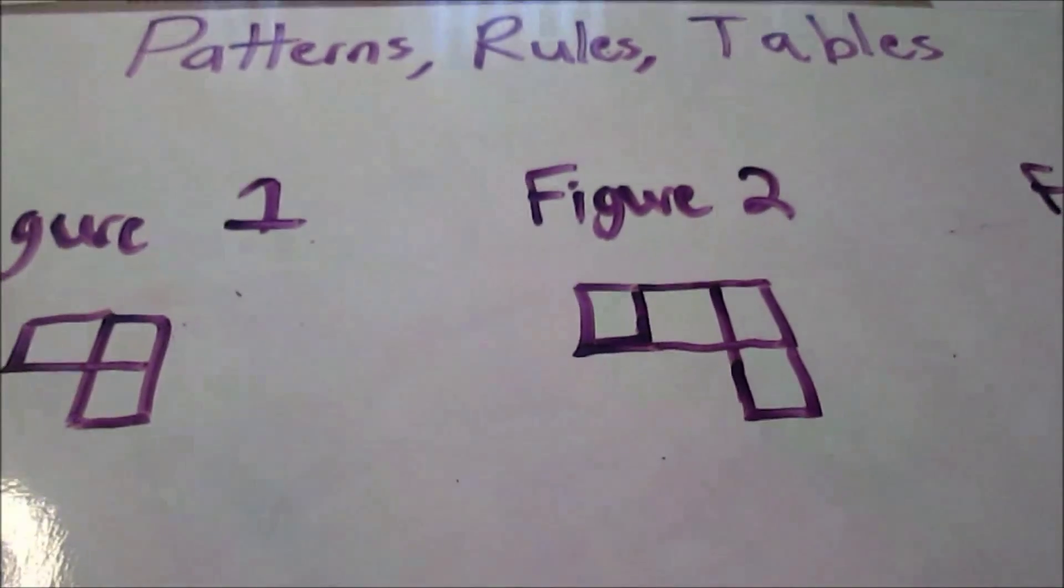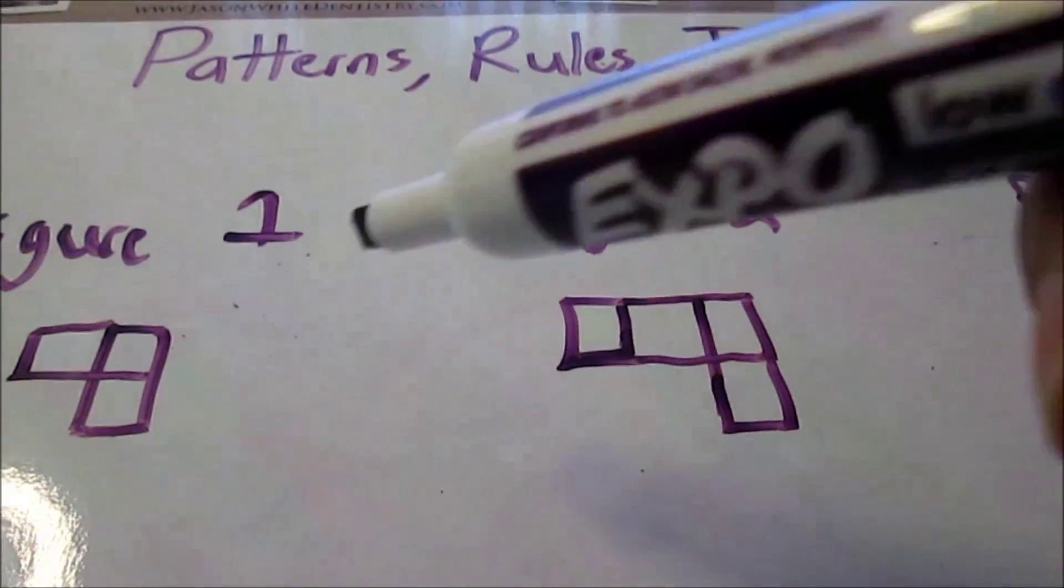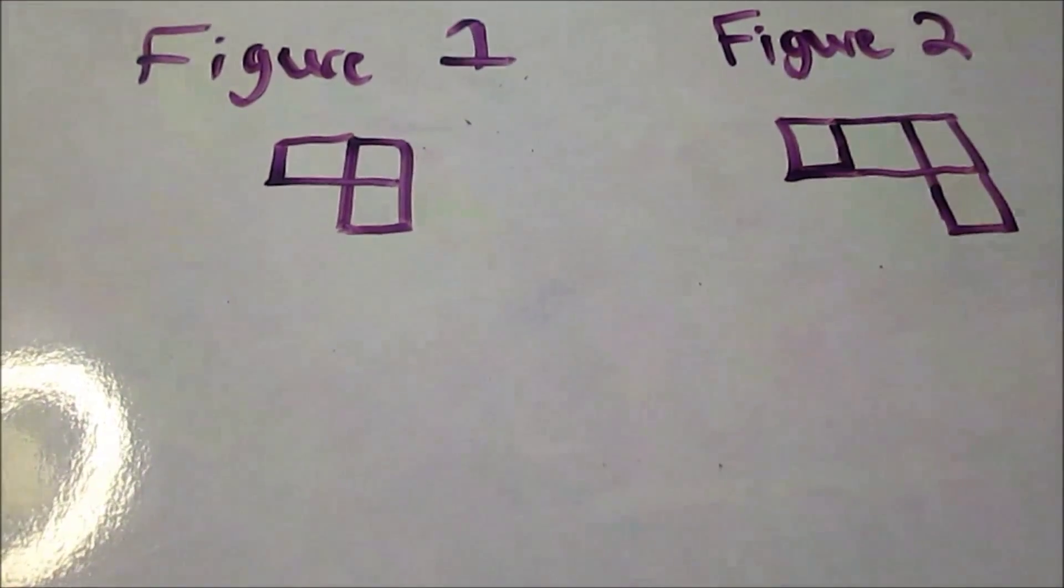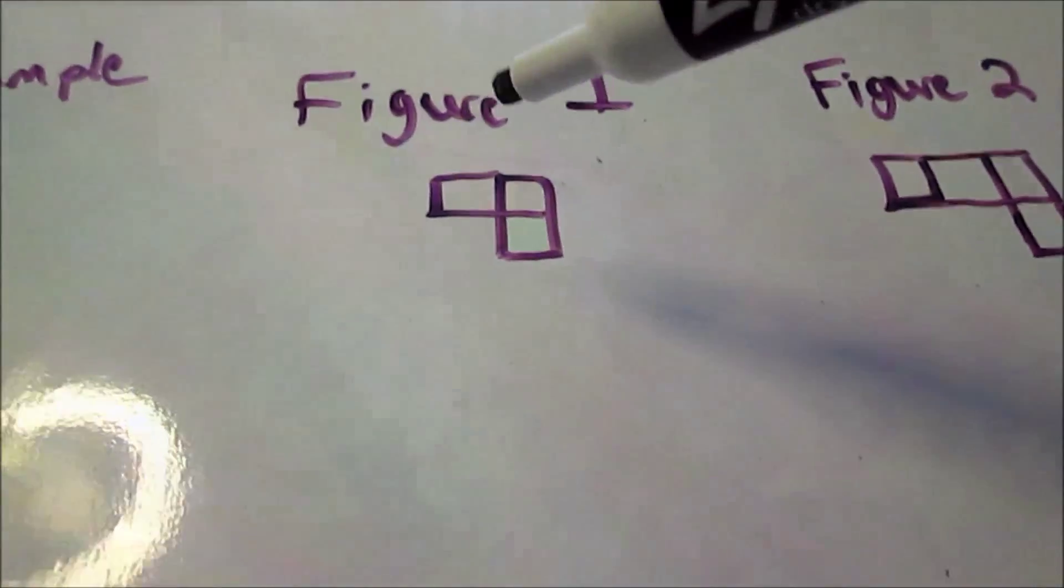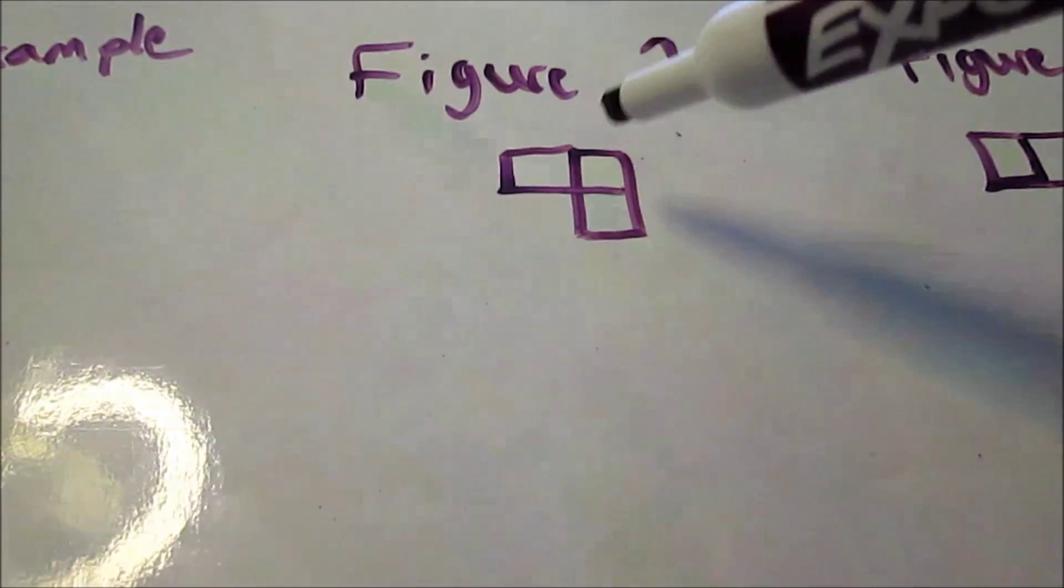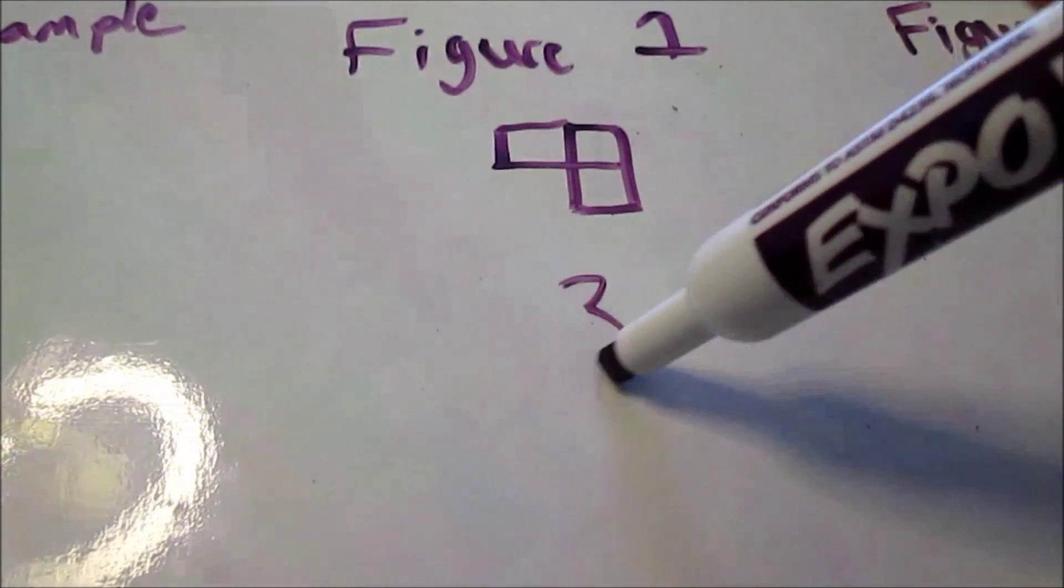Again, continuing on with patterns, rules, and tables, I have a third example, this time using figures that are arranged in blocks. And I need to look at the figure number and count the number of blocks. So figure one has three blocks.